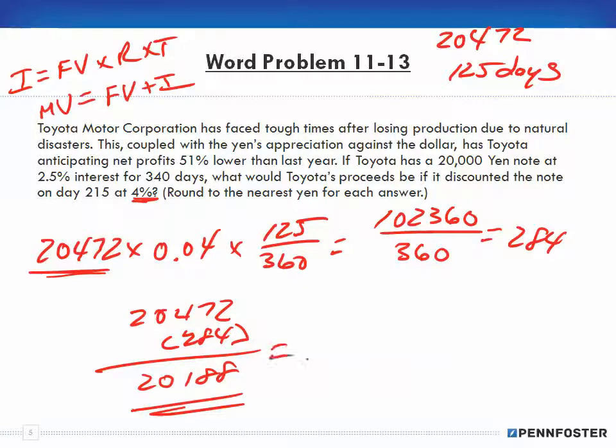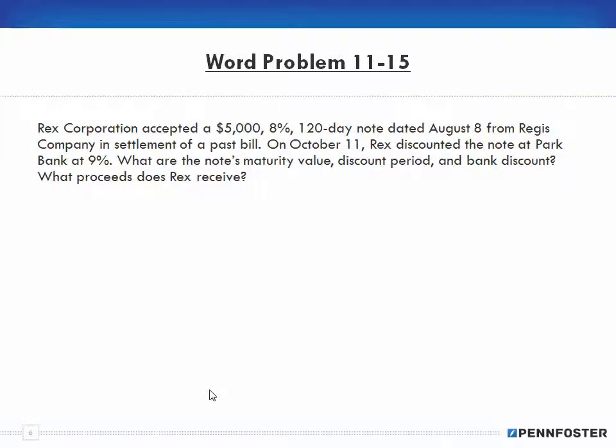Next problem, 11-15. Rex Corporation accepted a $5,000, 8%, 120-day note dated August 8th from Regis Company in settlement of a past bill. On October 11th, Rex discounted the note at Park Bank at 9%. What was the note's maturity value, discount period, and bank discount? What proceeds did Rex receive?